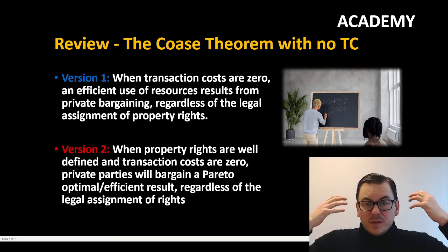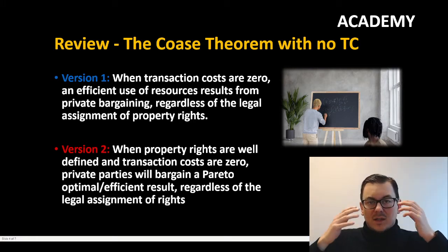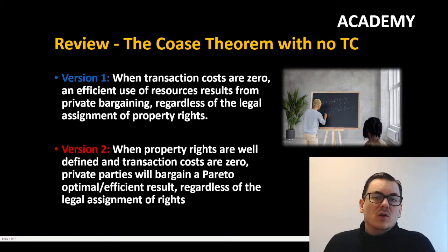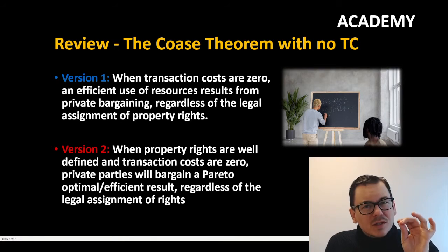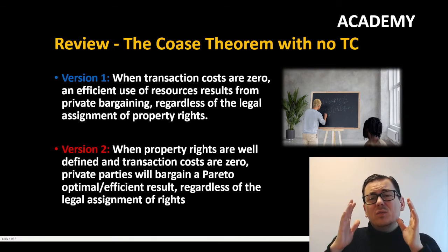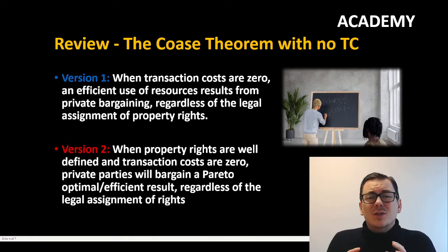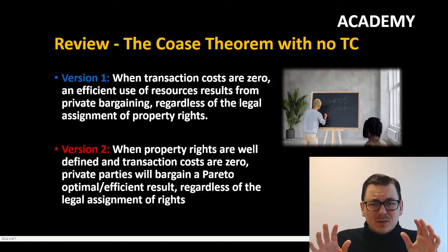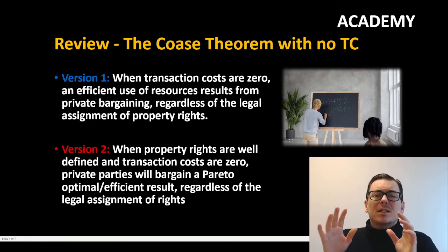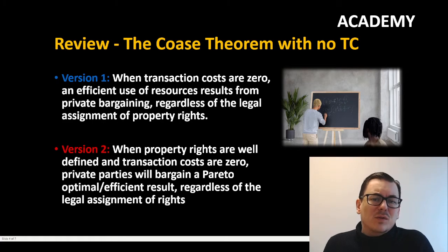This is the strict version — the classic Coase theorem — where we say that without any transaction costs, private parties will automatically bargain, no matter who has the right to do whatever, and they will bargain to a Pareto efficient result.